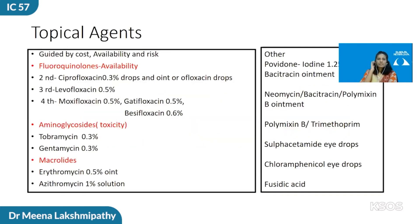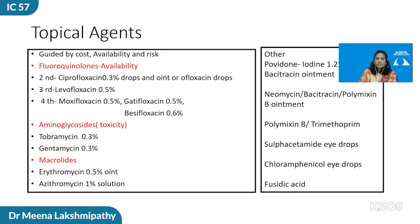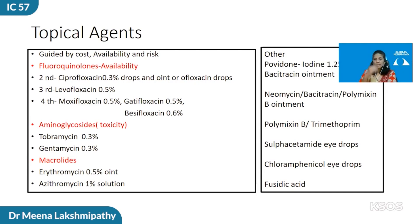The topical agents of choice are governed by what is available for the physician to use, what is available for the patient to buy, and the underlying risk factors for complications. Fluoroquinolones are largely well available — the second, third, and fourth generations are still present off the shelf. Aminoglycosides are also effective, but when used at high frequency can cause ocular toxicity. Macrolides are predominantly bacteriostatic and are used at a higher frequency and for a longer duration.